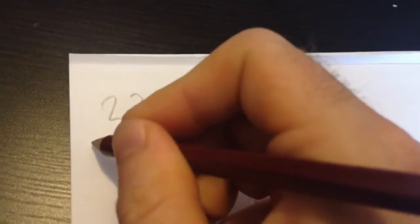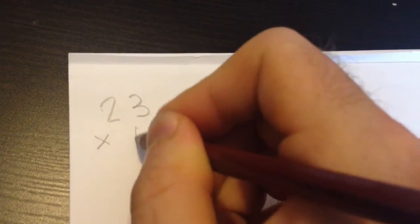Another way to do this sum would be to write it out vertically. That means up and down.